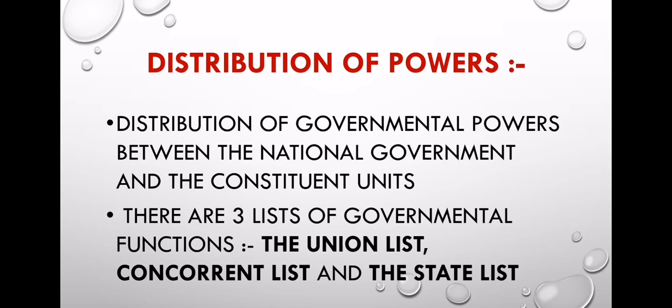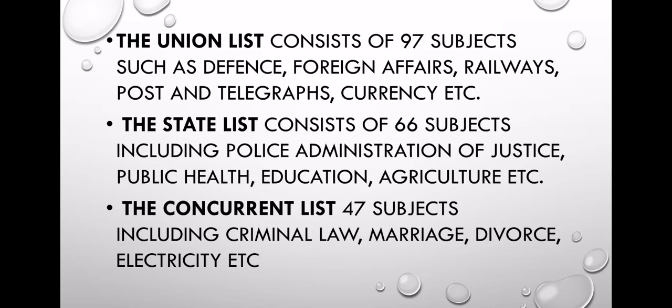There are three lists of government functions: the Union List, the Concurrent List, and the State List. The Union List consists of 97 subjects, such as Defense, Foreign Affairs, Railways, Post and Telegraphs, and Currency.